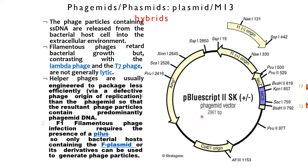The F1 filamentous phage infection requires the presence of a pilus, so only bacterial hosts containing the F-plasmid or its derivatives can be used to generate phage particles.